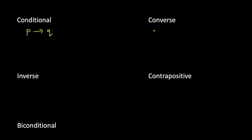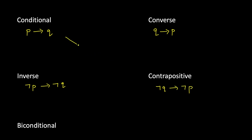For the converse, you just flip the hypothesis and conclusion, so Q becomes the hypothesis: Q implies P. For the inverse, you keep the ordering the same but negate both: not P implies not Q. Then we have the contrapositive, where you take the negation of the converse: not Q implies not P.